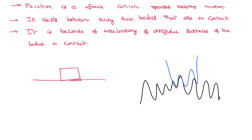This interlocking opposes the relative motion because one body got interlocked with the other body. If you want to move the body, you have to break that interlocking. That is why friction is generated. So we can simply say friction exists between every two bodies because no body is actually perfectly smooth. Every body has rough surfaces, and those rough irregular surfaces get interlocked when you keep one body over the other, which opposes the relative motion.